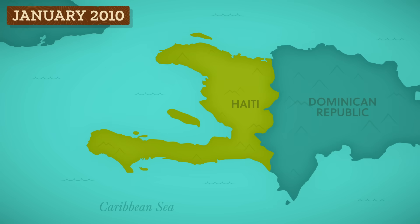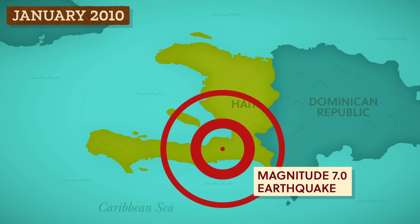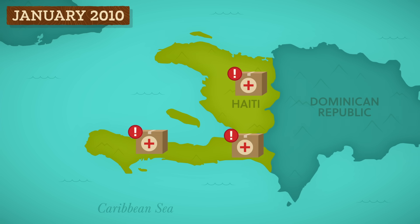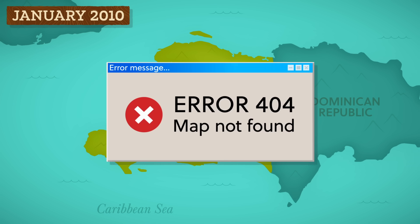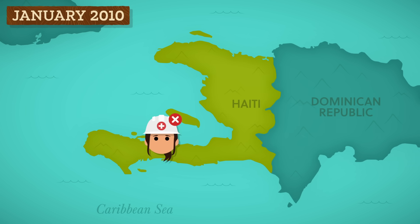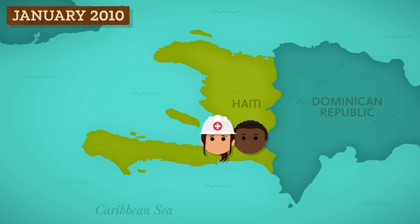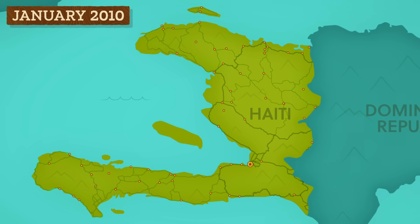In January 2010, a magnitude 7.0 earthquake shook Haiti and the Dominican Republic, creating massive damage and killing hundreds of thousands of people. Relief efforts in Haiti were delayed because aid workers didn't know where to go or how to get there — clear maps of neighborhoods and remote regions of the island before the quake just didn't exist. But the locals did know the area: what was there, how it was organized, and what it meant for their communities. So that collective knowledge — perceived space — was put to work. In two weeks, Haiti went from no map to a complete map in the first crowd-sourced mapping effort for humanitarian purposes.